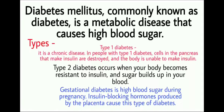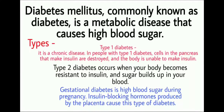Type 2 diabetes occurs when your body becomes resistant to insulin and sugar builds up in your blood. The third type is gestational diabetes — high blood sugar during pregnancy, caused by insulin-blocking hormones produced by the placenta.